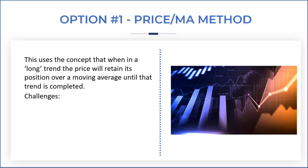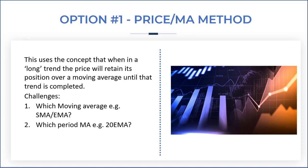The Price MA method is a concept where, when in a long trade, the price will retain its position over a moving average until that trend is completed. There are various challenges associated with this. First, which moving average do you use — for example, a simple moving average or an exponential moving average? Many experienced traders prefer the exponential moving average as it is more responsive to trend, being weighted more on recent prices.